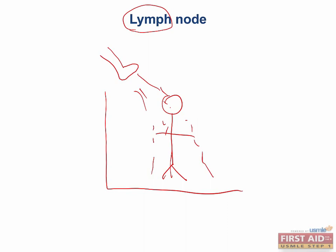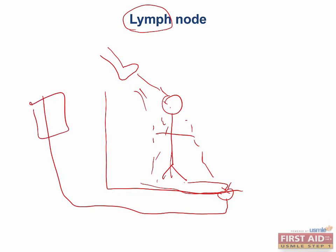So here's the water running over you, and all the dirt that was on you collects with the water, and then it's drained into the shower drain. All this dirty water eventually is filtered at a water treatment facility, and then the clean water that was filtered is recycled again. This essentially is lymph.